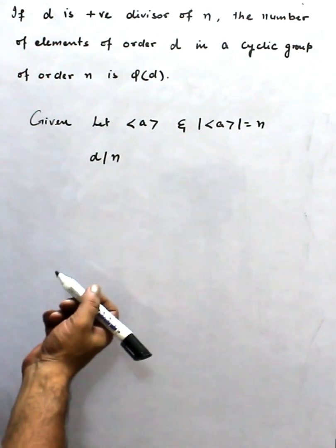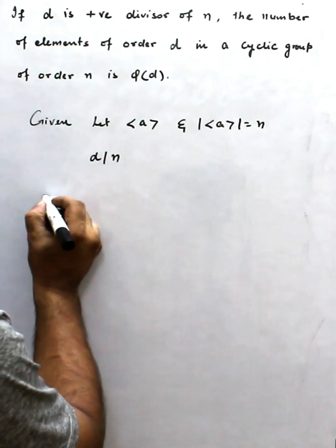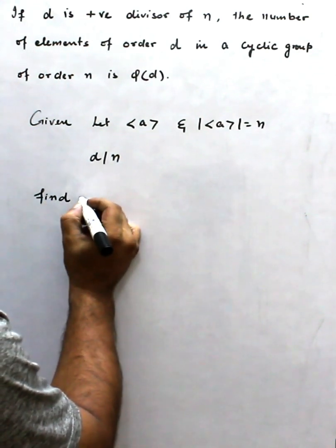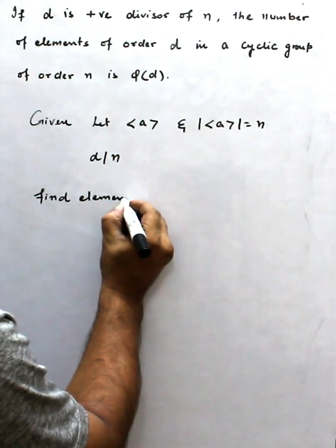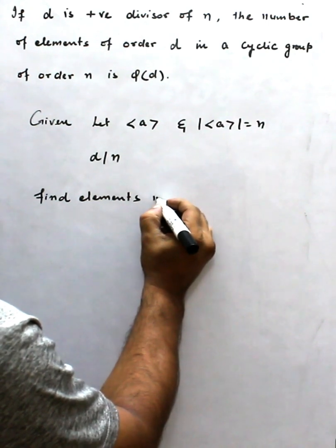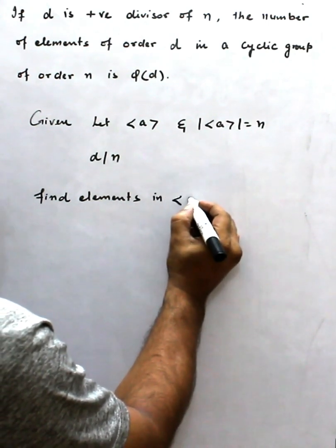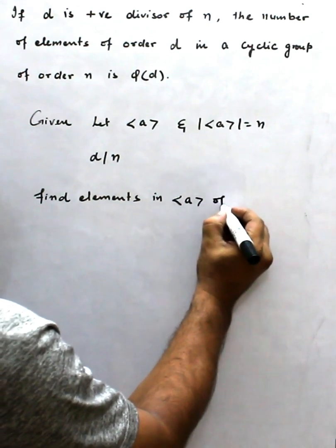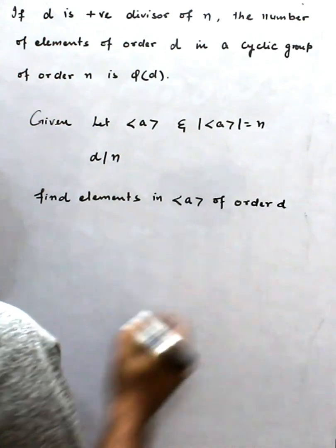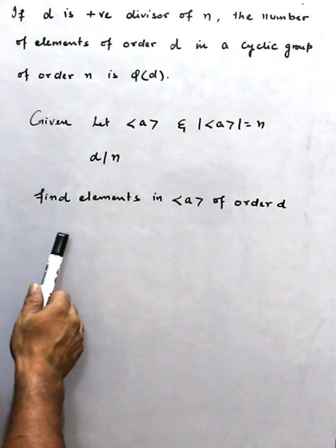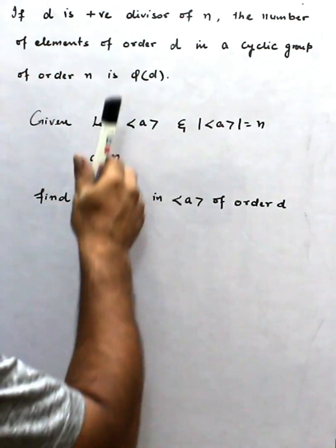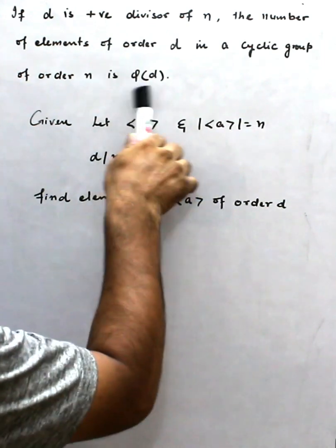Now what we have to do, what we have to find. We have to find elements in cyclic group <a> of order d and we have to show that these elements equal φ(d).